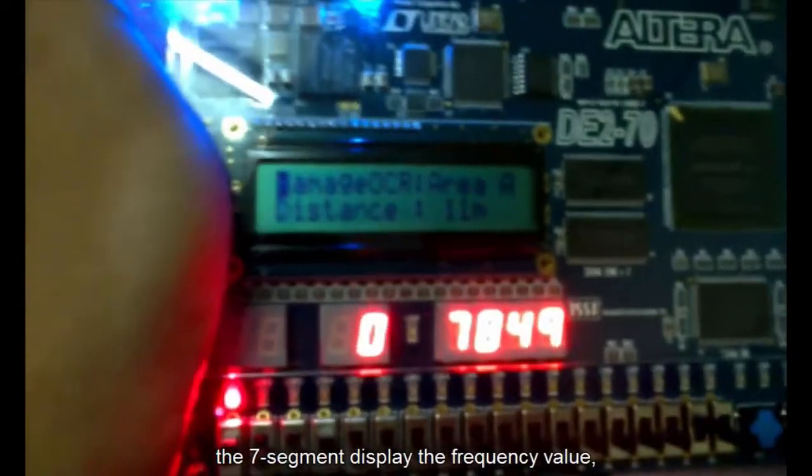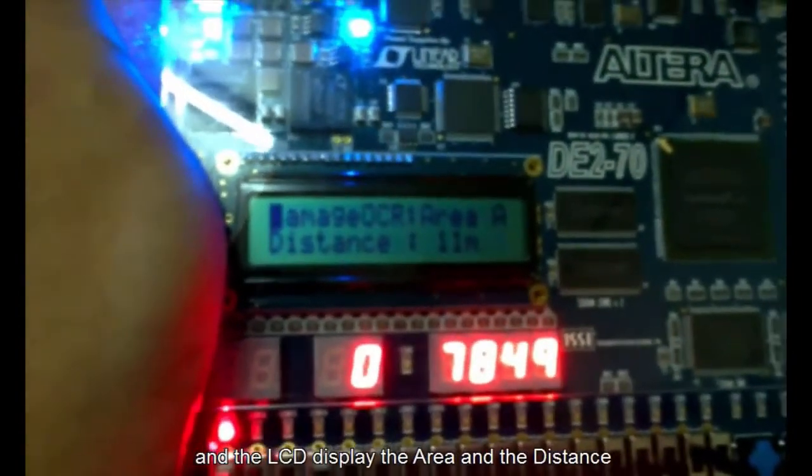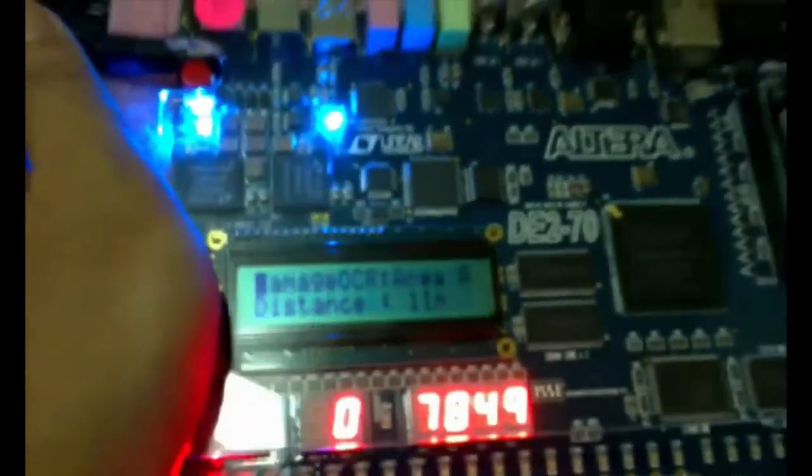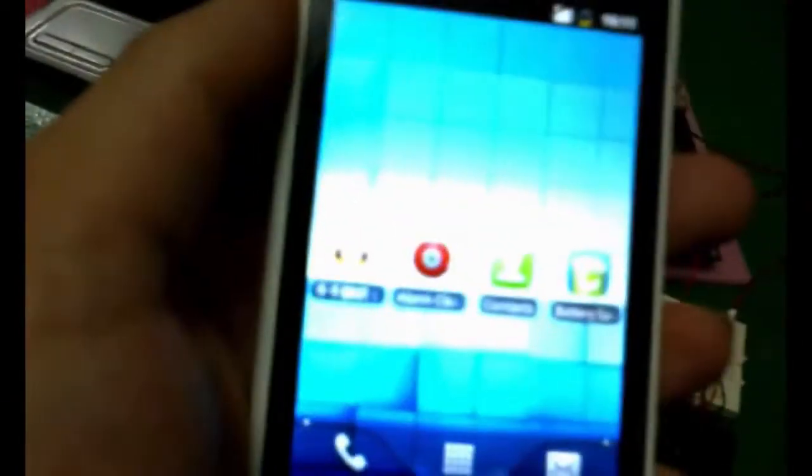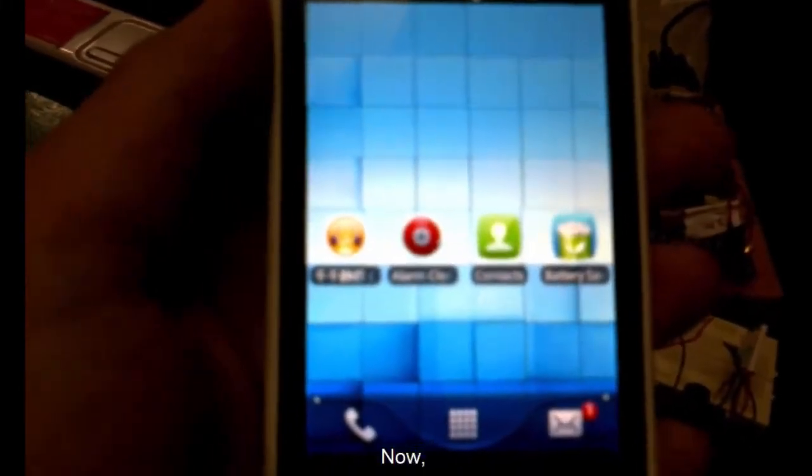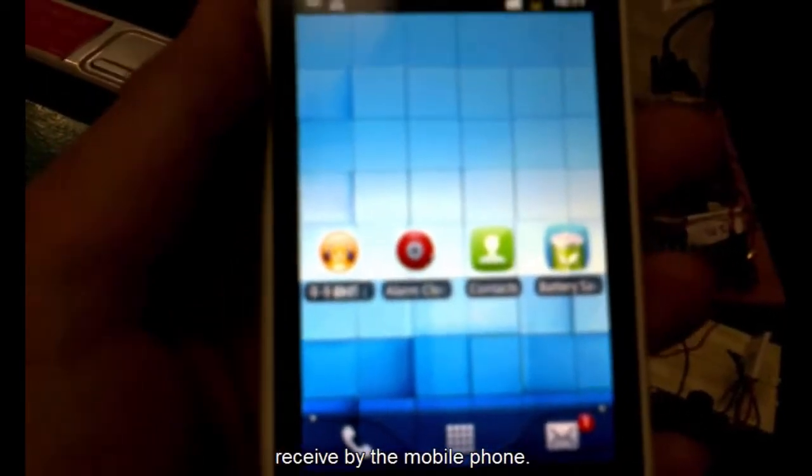As you can see, the 7-segment display shows the frequency value, and the LCD displays the area and distance of the copper cable being cut. Now, the warning message is received by the mobile phone.